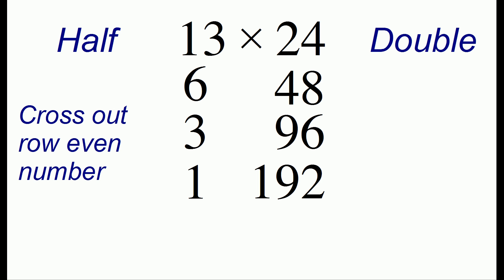The third step is to modify our table by crossing out any row that starts with an even number. In our table, only the row that starts out with 6 is an even number, so we're going to cross out the entire row.